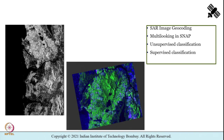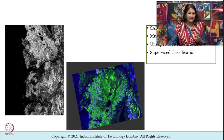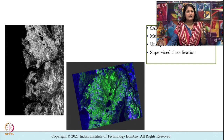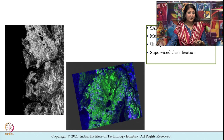We then performed multi-looking, after which the image has approximately square pixels because we are converting from slant range to ground range. We also subset the image and performed speckle filtering. Speckle refers to the random constructive and destructive interference that results in salt-and-pepper noise — a grainy appearance throughout the image — which we reduced by applying the Lee filter.